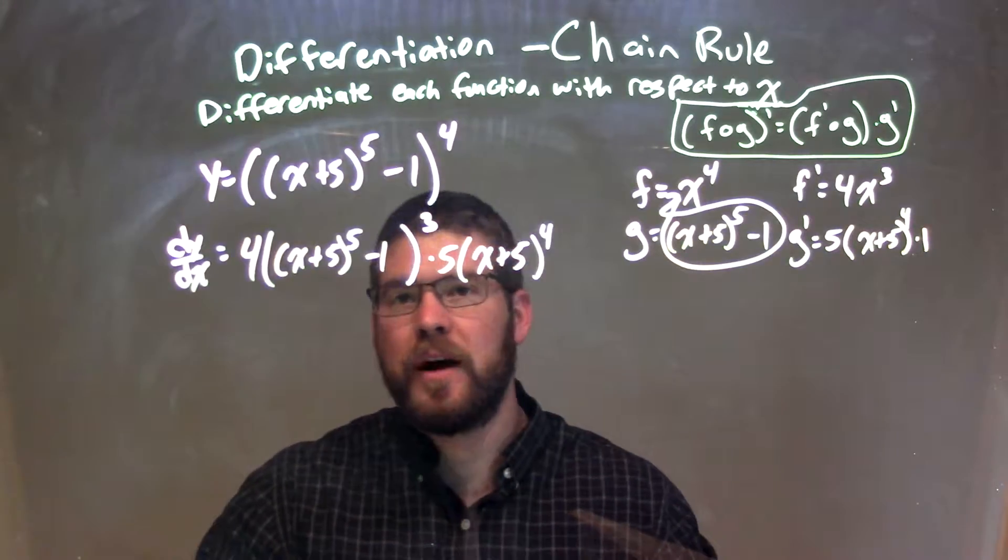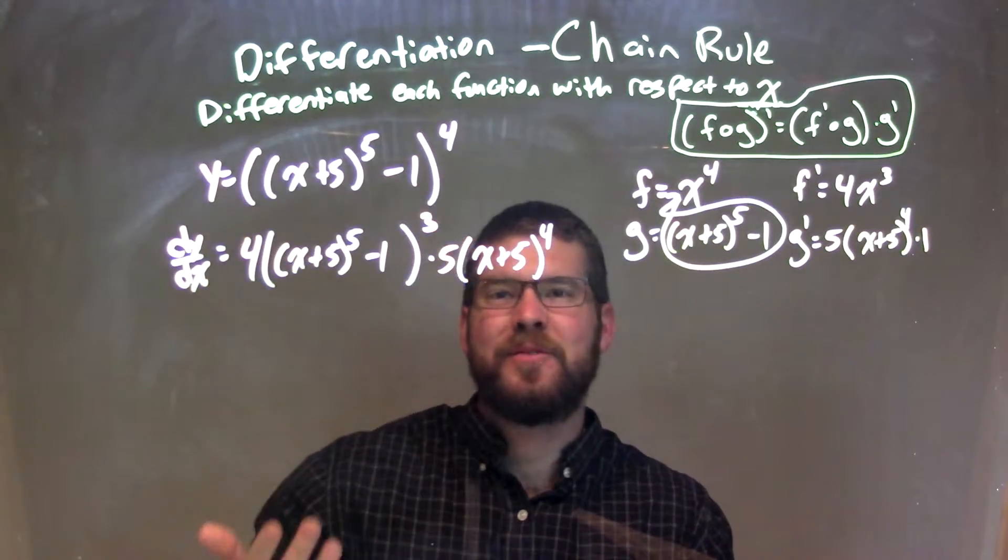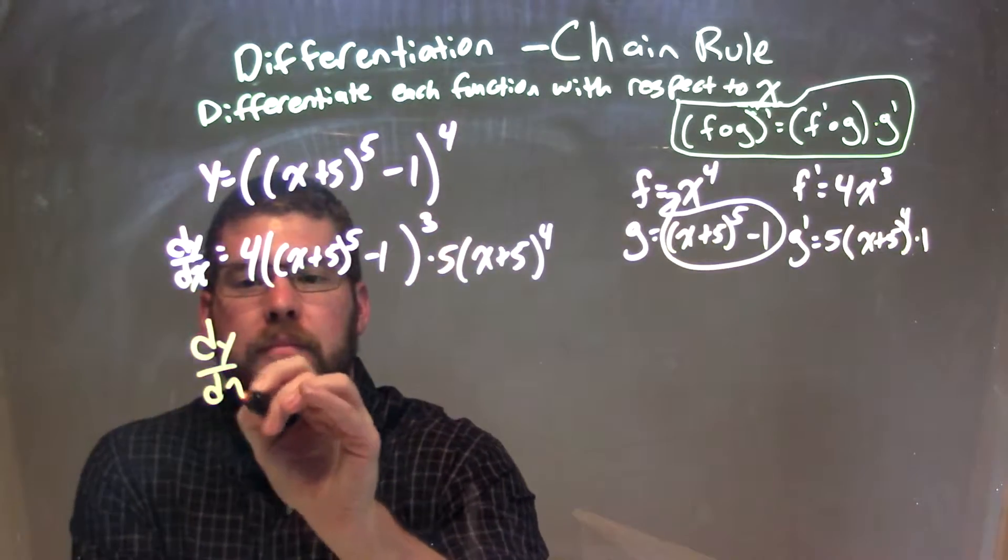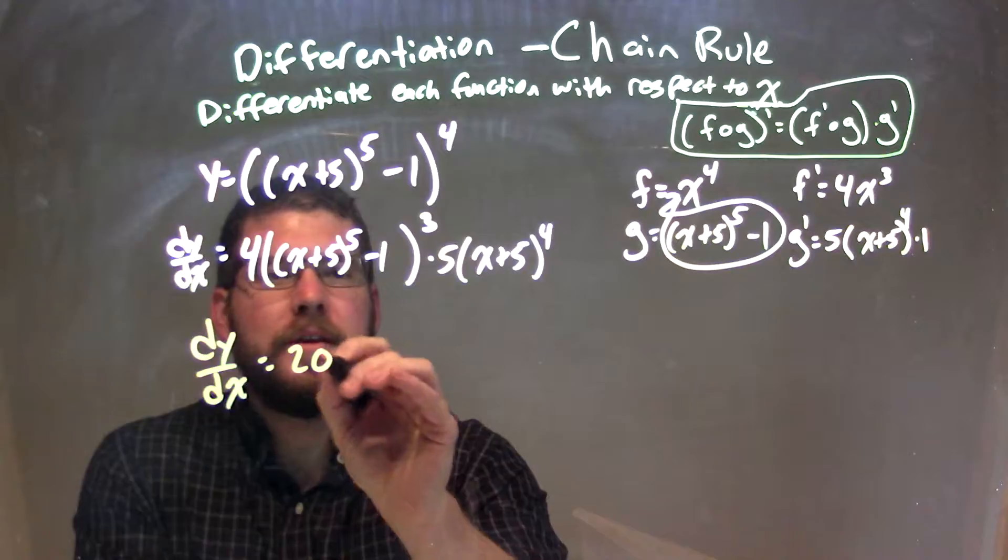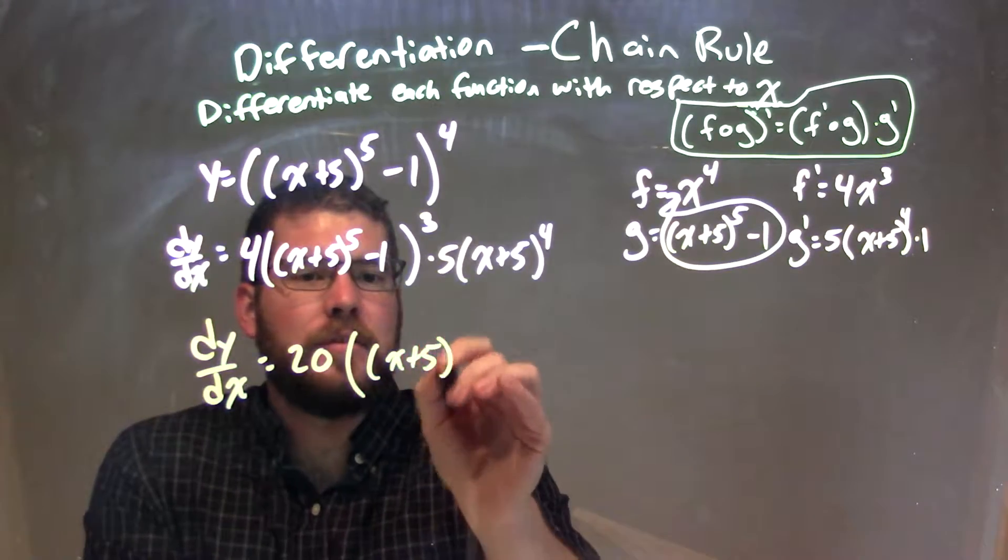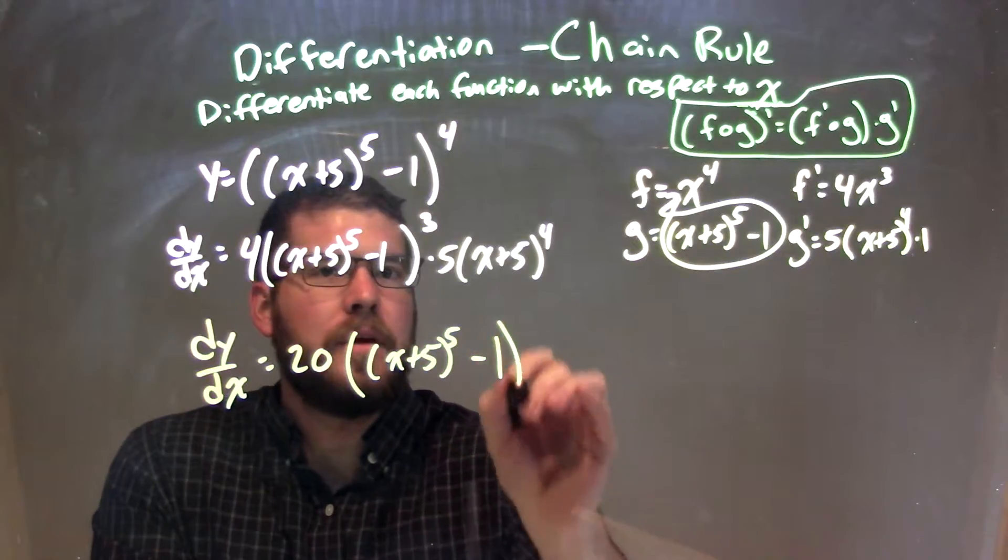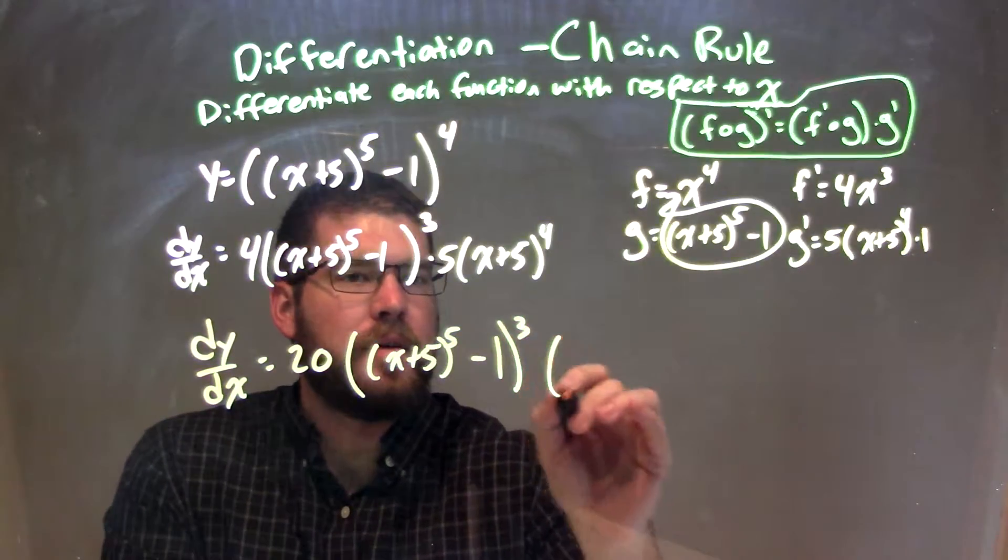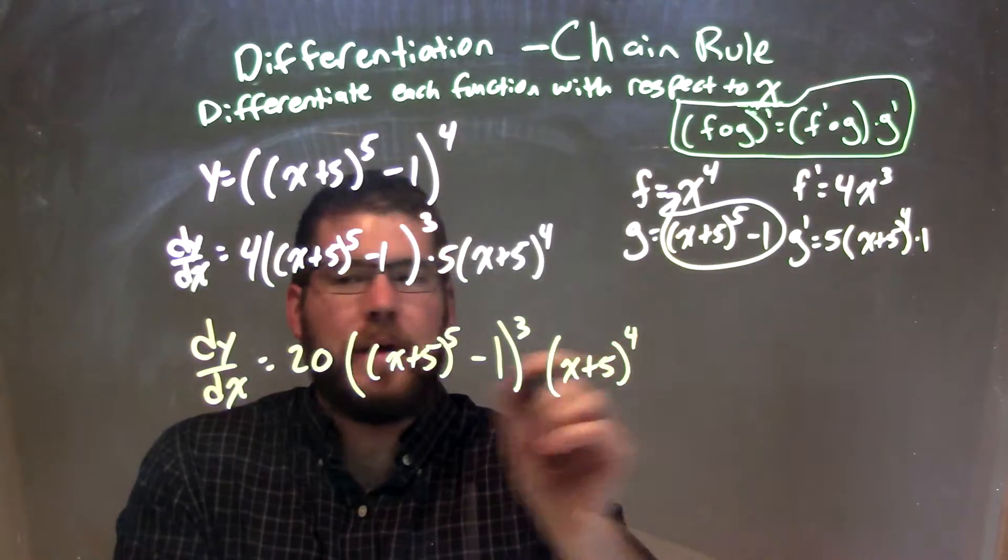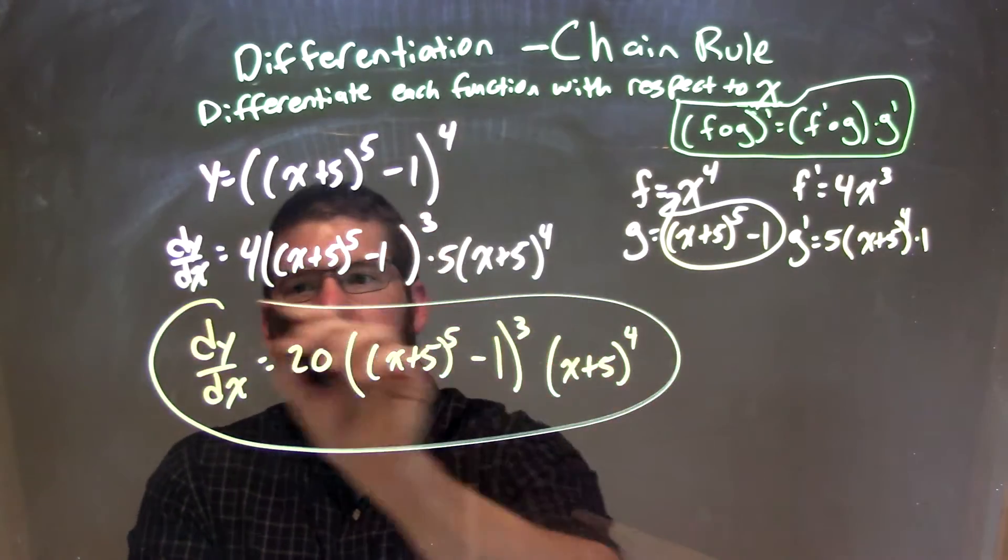So now let's just simplify. I'm just going to put the 5 times the 4 out front. And really, that's going to be it. So we have my dy dx here. 5 times 4 is 20. There's a multiplication there. Parenthesis. x plus 5 to the 5th power minus 1 to the 3rd times this last little bit, x plus 5 all to the 4th power. And there we have our final answer.